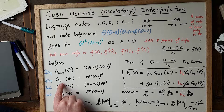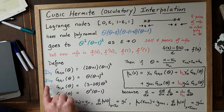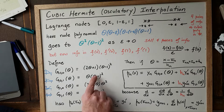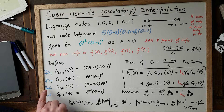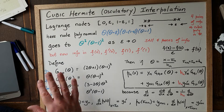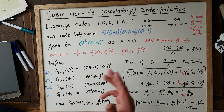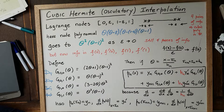G₀,₁(θ) = θ(θ − 1)². This is zero at theta equals zero because of that factor, and it's zero and flat at theta equals one — the derivative is zero there. A moment's consideration shows the value of the derivative of this polynomial is 1 at theta equals zero. So it's like the Lagrange property: these polynomials are either 1 or have derivative 1 at the point where we want that particular piece of information.